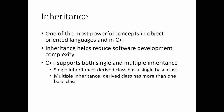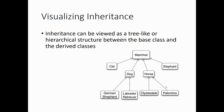For example, a date-time stamp could inherit from both the date class and the time class — some people call those frankenclasses. Languages such as Java don't support multiple inheritance, but C++ does. And if you're using a language that doesn't support multiple inheritance, there are workarounds for it; you just have to change the design.